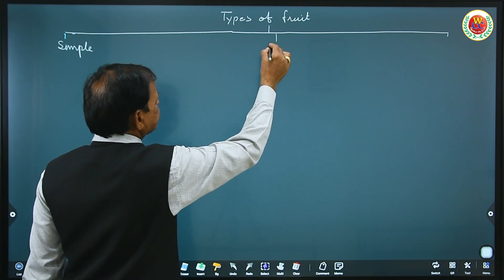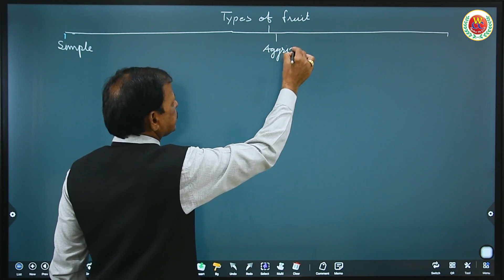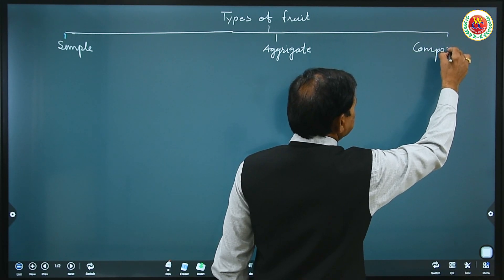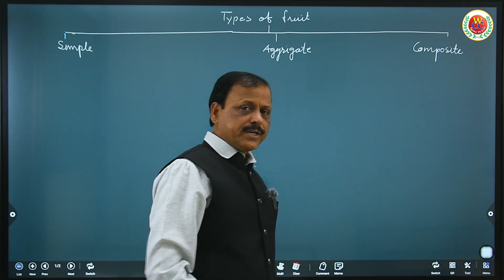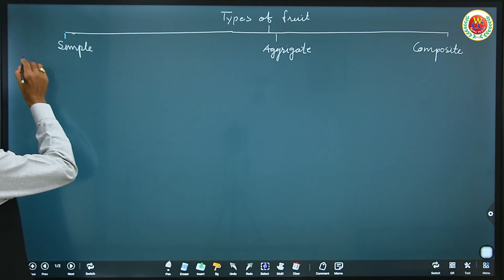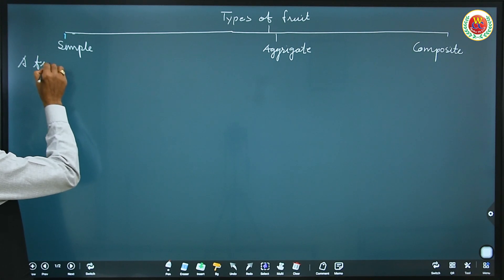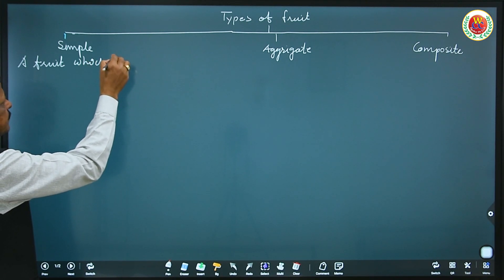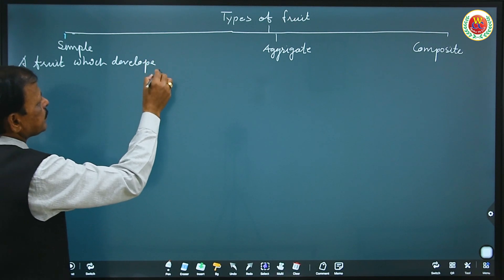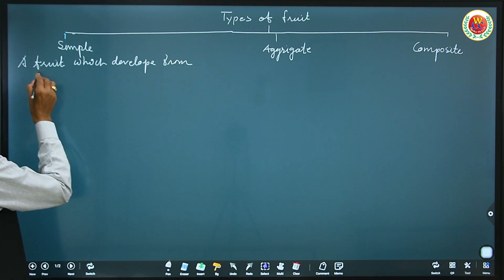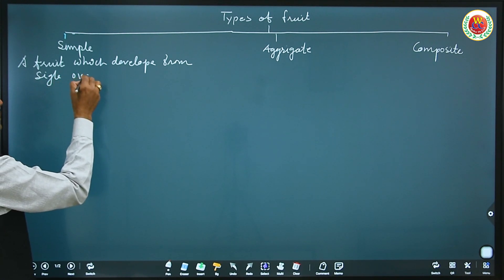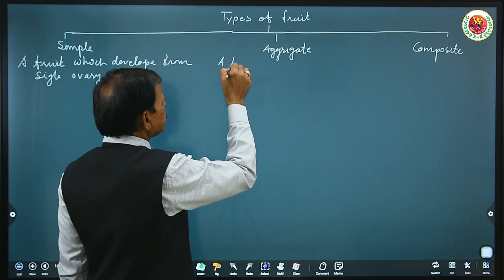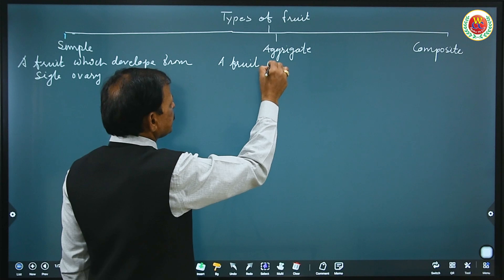What is a simple fruit? A fruit which develops from a single ovary is known as a simple fruit. Aggregate fruit is a fruit which develops from many ovaries.